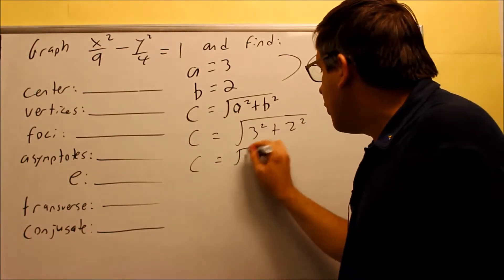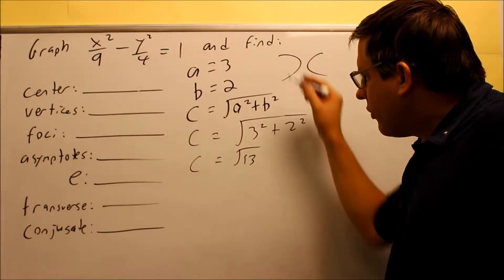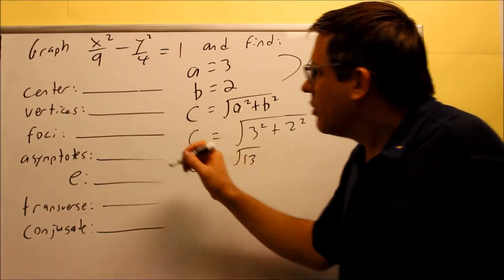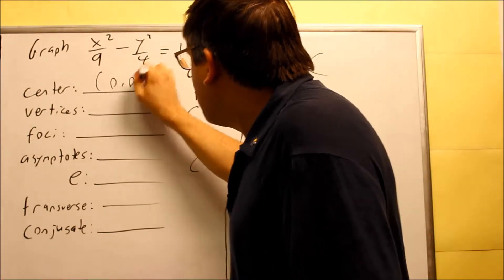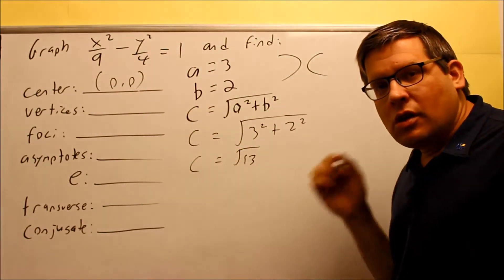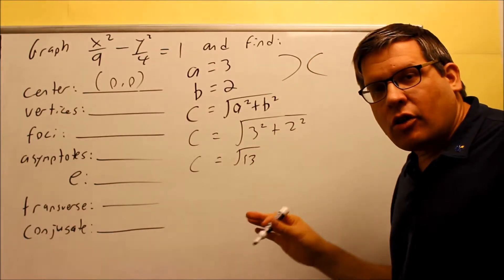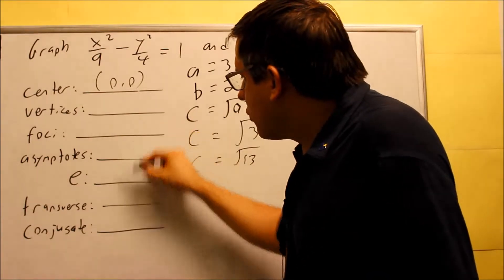Now that we have this complete, we can start answering some of these questions. For the center, if you don't see any parentheses involved there, that means automatically your center is going to have to be zero zero. The vertices and the foci I'm going to hold off on that and read those off the graph itself.